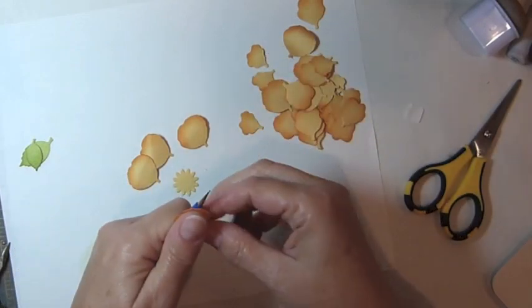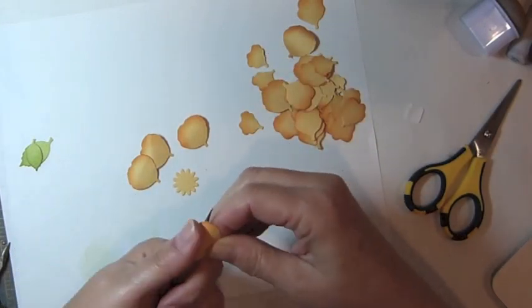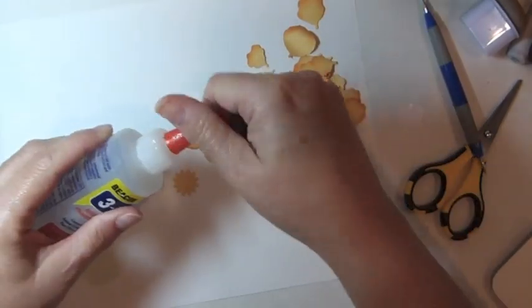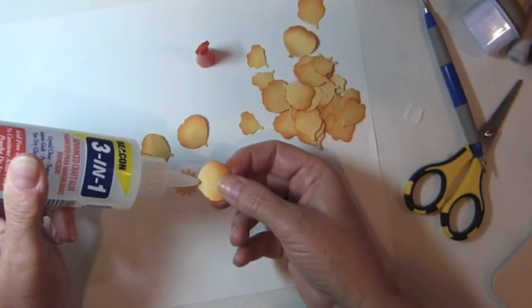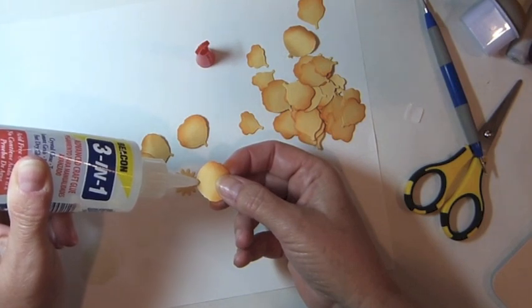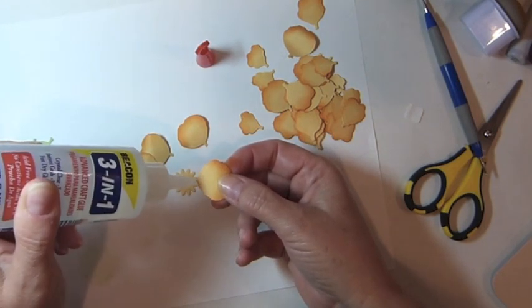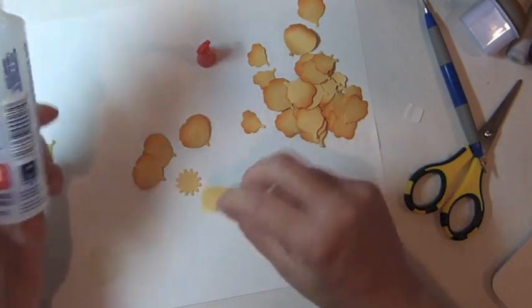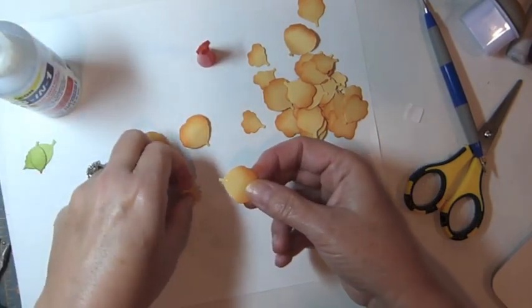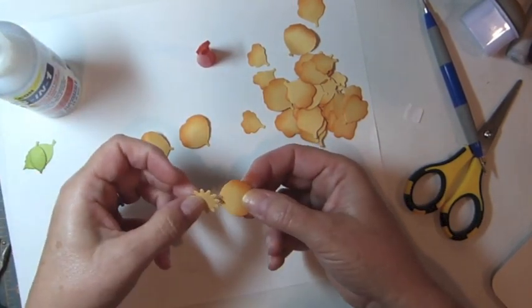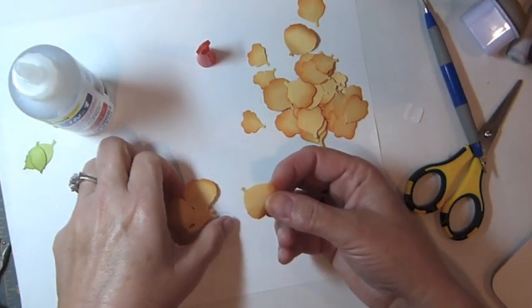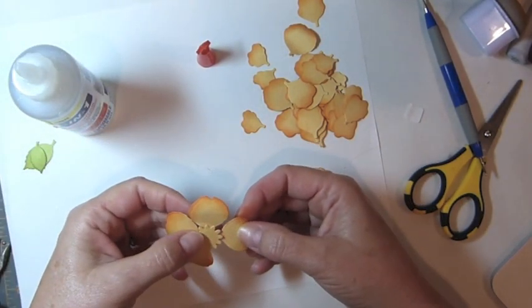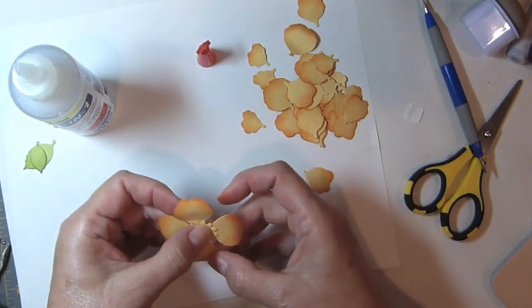Starting with the largest petals, use a stylus tool to curve them. Apply adhesive to the tip of a petal and adhere to the petal base. Repeat with three more large petals to create the first layer of your flower.